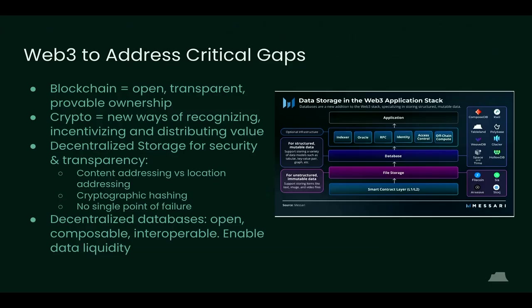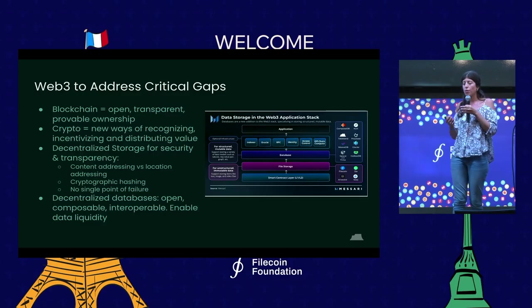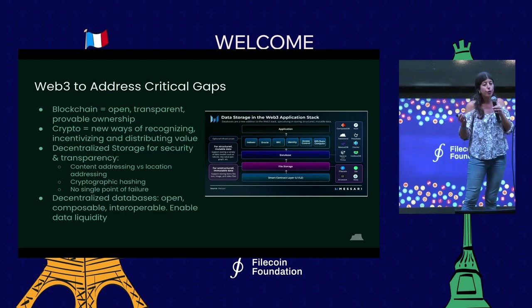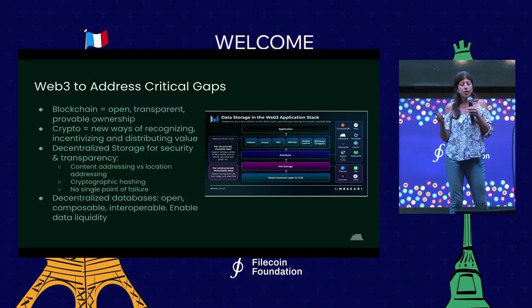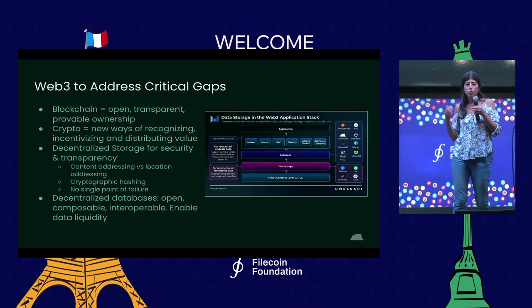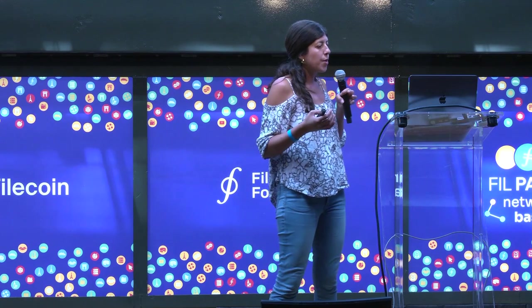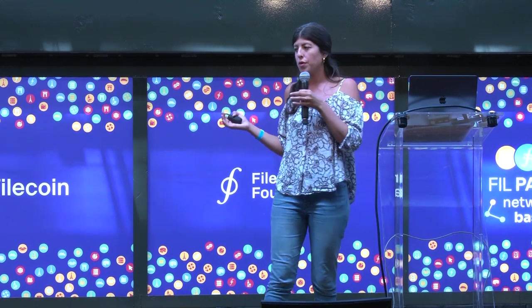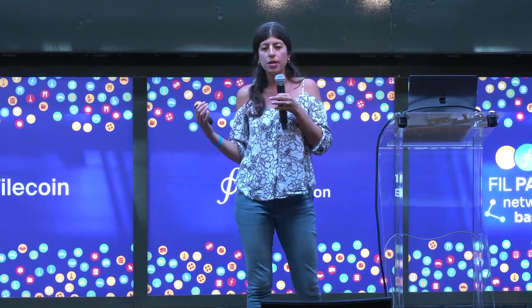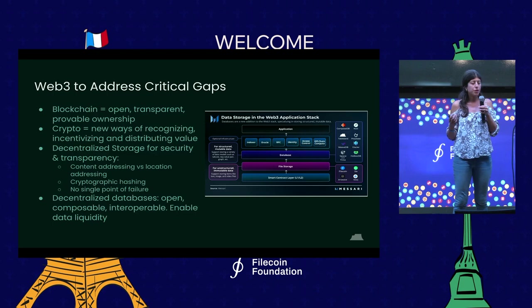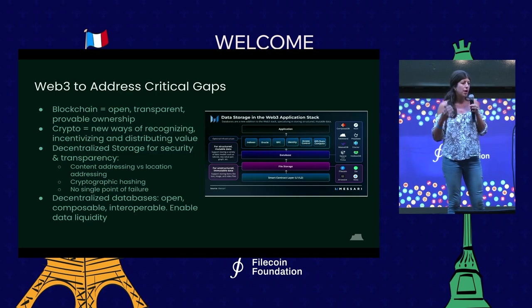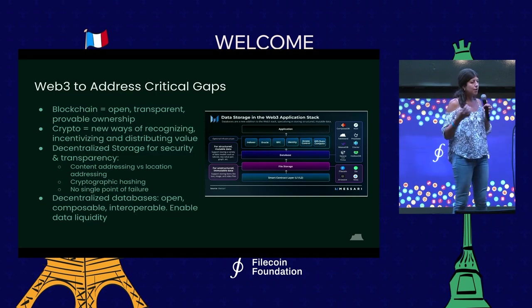All the while, Web3 has been coming to fruition. I see the Web3 movement as really nicely aligned to some of those shifts. The blockchain is open and transparent - you can prove ownership in a digital sense, which when we're creating all this digital content feels really important. Crypto is creating new ways to incentivize and reward people and move value on the internet. And decentralized storage - what Filecoin is doing - is making it more secure and more persistent to put your files and data online. And I believe there's a really important place for decentralized databases to make data more open and interoperable, creating an internet where you can move value more easily and your data becomes more liquid.